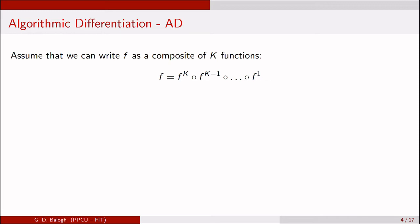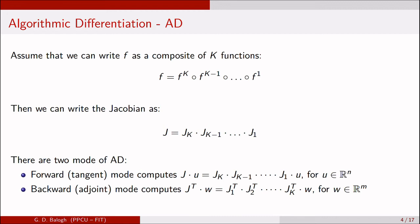But the question is how to get there. Let's assume that our function is a composite function with K sub-functions. Then basically our Jacobian can be written as the product of the Jacobians of the sub-functions.